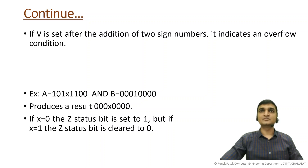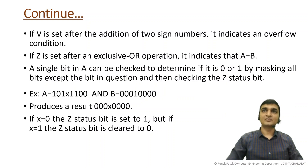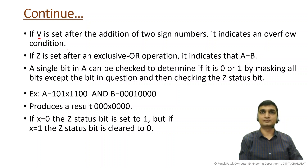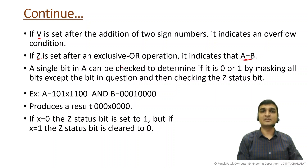If V is set after the addition of two signed numbers, it indicates an overflow condition. If Z is set after an exclusive-OR operation, it indicates A equals B, because X XOR X equals 0 for any single bit — so the result is 0, the Z flag is set, and we can say A is equal to B.